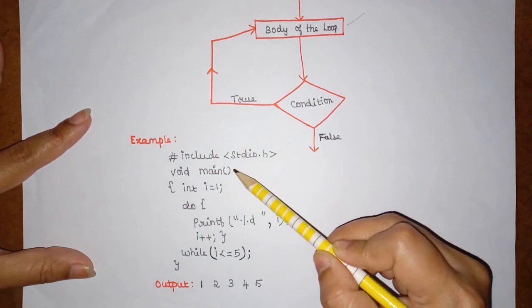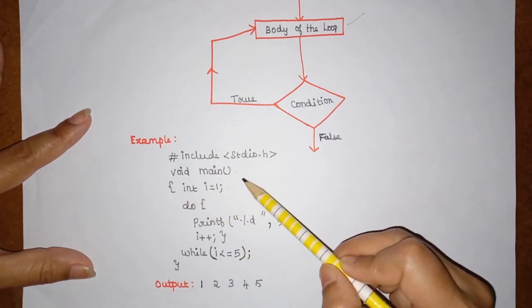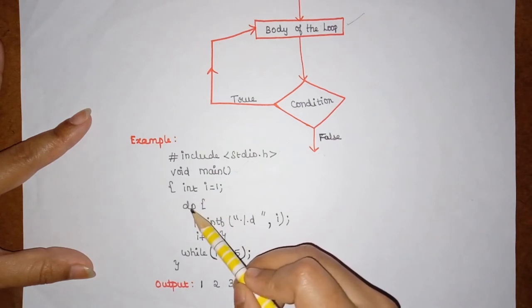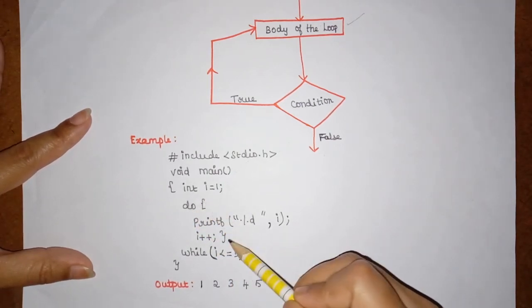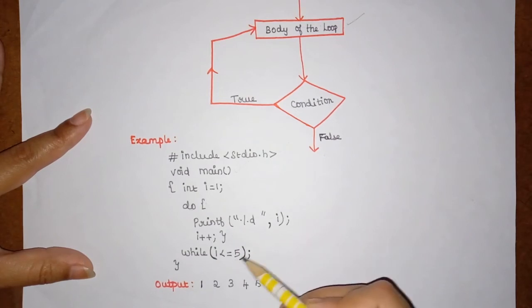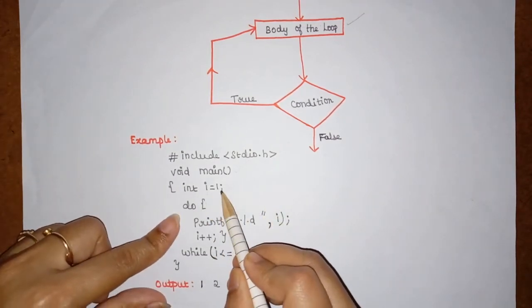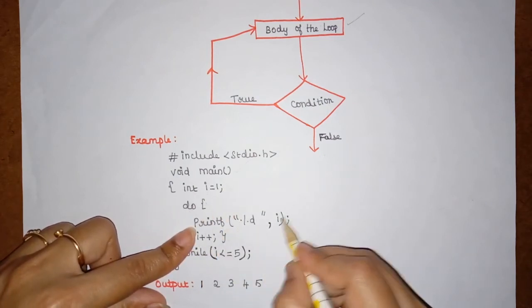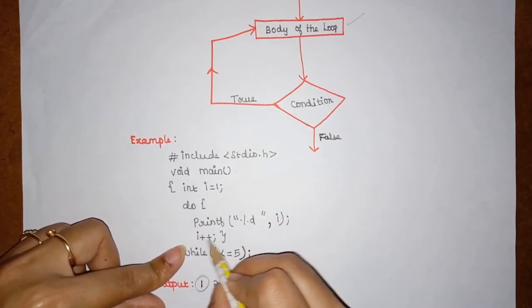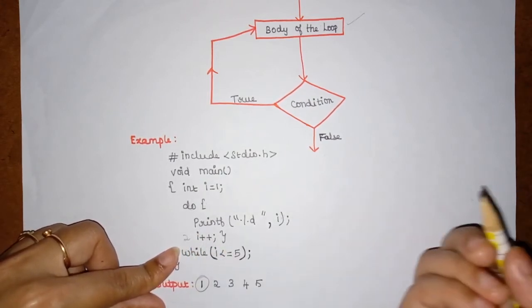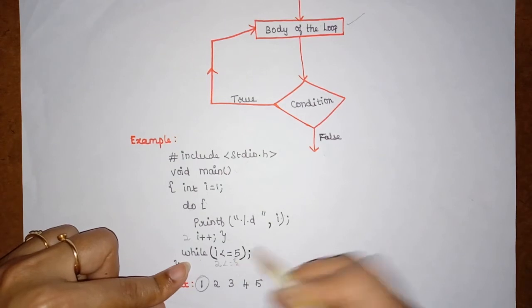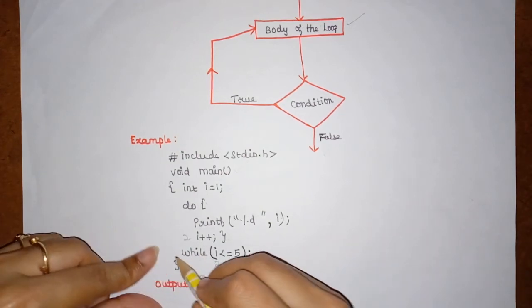In the example, starting with the header file and main function, the first statement initializes i to one. Inside the 'do' block, we have a print statement that prints the value of i, followed by an increment. The initial value i=1 gets printed, then i is incremented to two. The condition checks whether two is less than or equal to five — this is true, so the loop executes again and prints two.